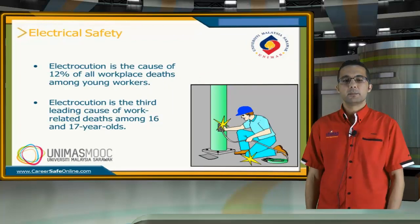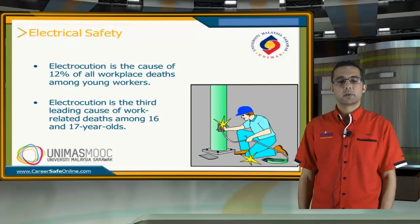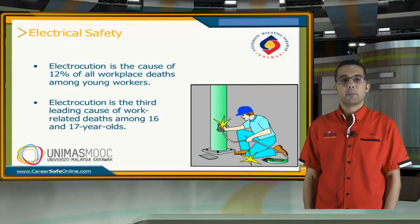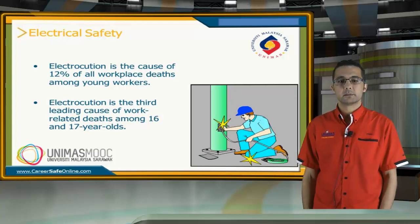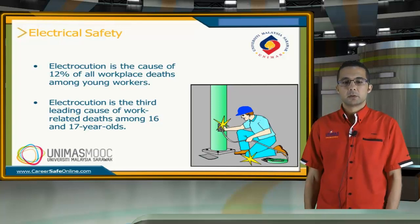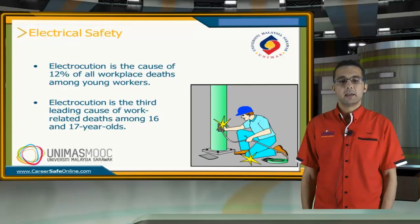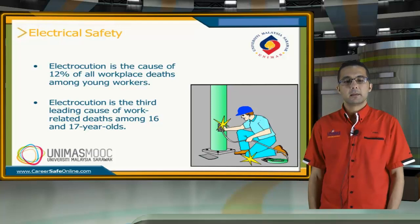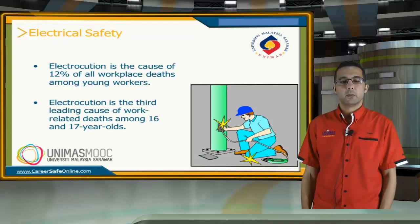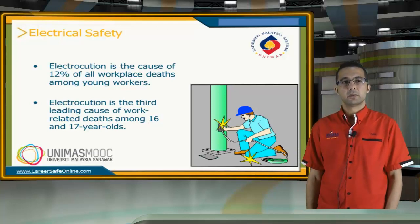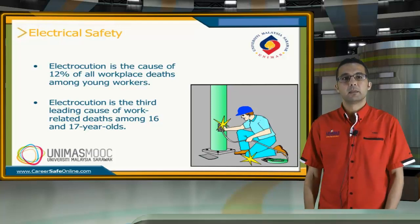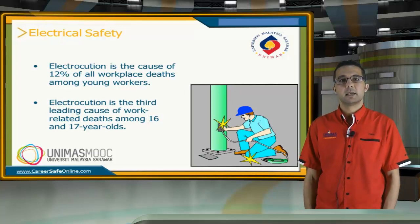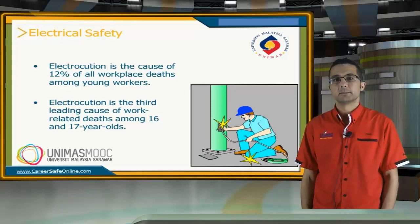Electrocution is the cause of 12% of all workers' deaths among young workers. It is the third leading cause of worker-related deaths between the ages of 16 to 17.